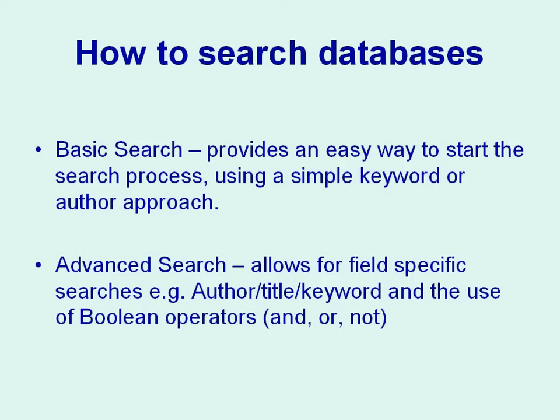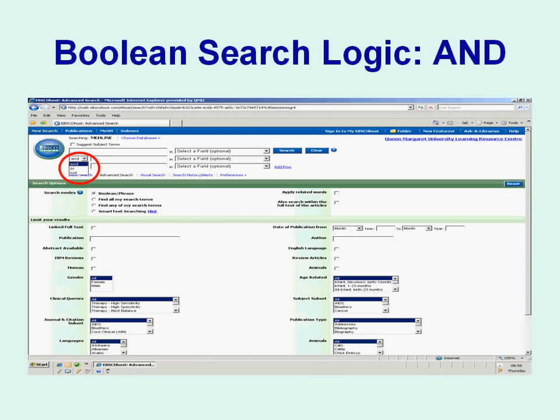The next few slides demonstrate how Boolean operators are used in databases. Some search screens include a drop-down box to choose your operator, as seen in the Medline database. Some search engines like Google automatically add AND for you, so you don't need to use it, but you do need to understand it. When you link terms with AND, you reduce the number of results because you are making your search more specific. The more terms you link together, the fewer but more specific results you will have.